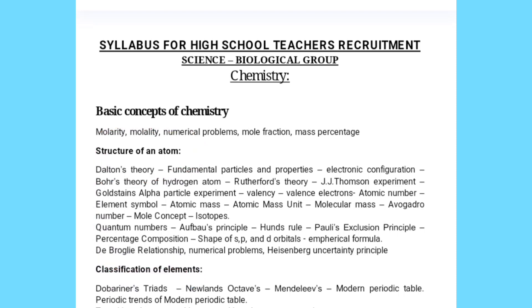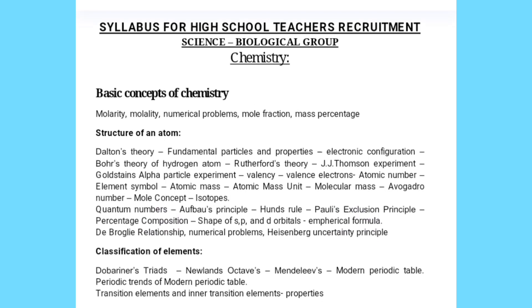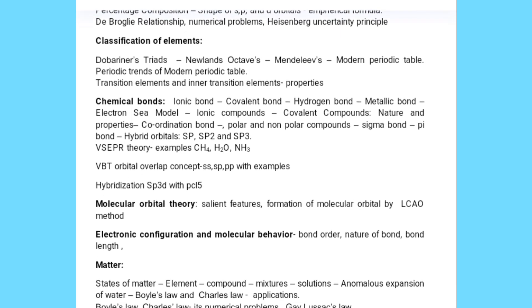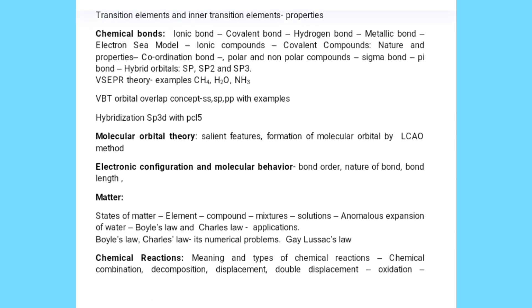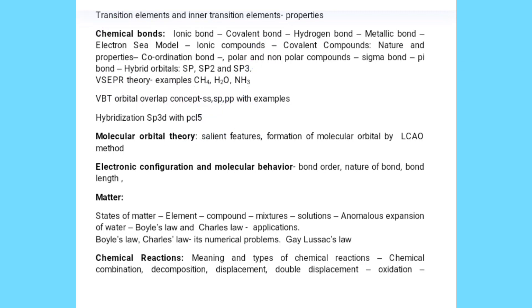If you have not prepared this, you can check the channel playlist — you will find chapters like molecular mass, percentage composition, and empirical formula, which were taken for GPSTR and are also useful for HSTR. Next is classification of elements, where topics like Dobereiner's triads are given — this entire unit is already covered. Then moving to chemical bonds: ionic compounds, covalent compounds, polar and non-polar bonds, sigma bonds, and pi bonds — you have to focus on all these in depth for HSTR.